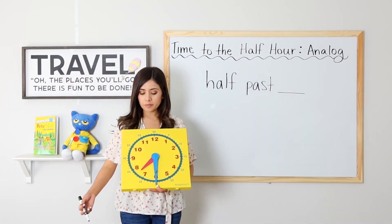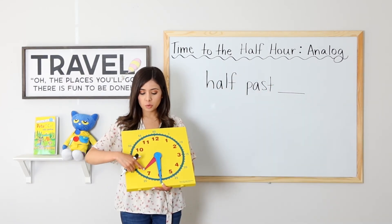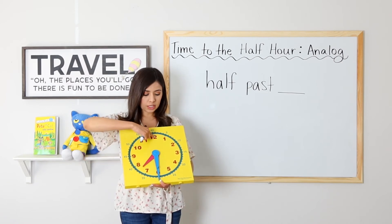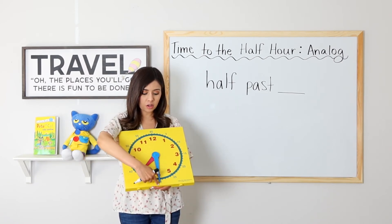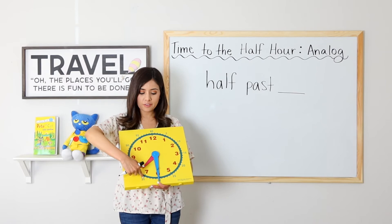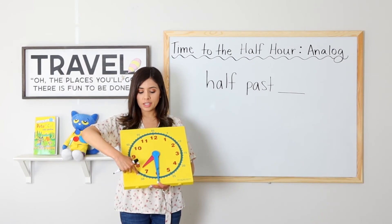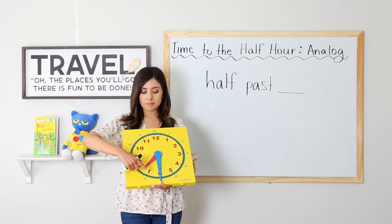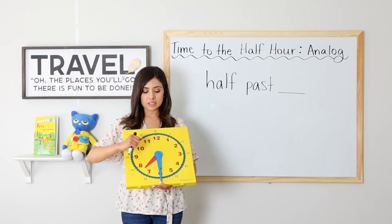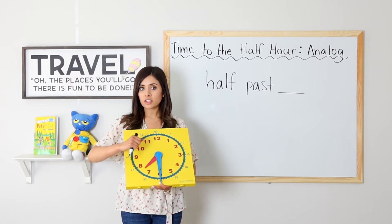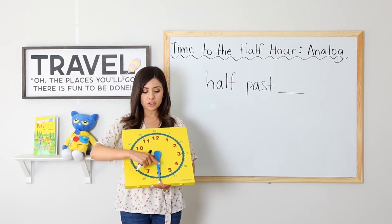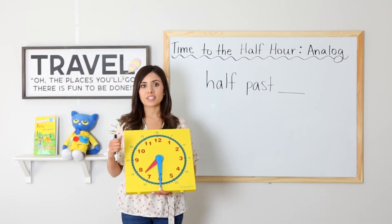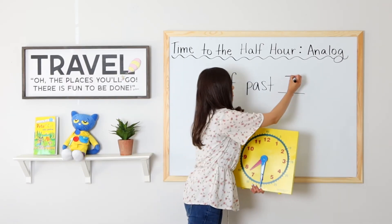Next example. The hour hand is pointing between the seven and the eight. We're coming this way, all the way to the seven. It has not touched the eight yet, so it is still seven. And the minute hand is pointing to the six — that's thirty. Seven thirty, or half past seven.